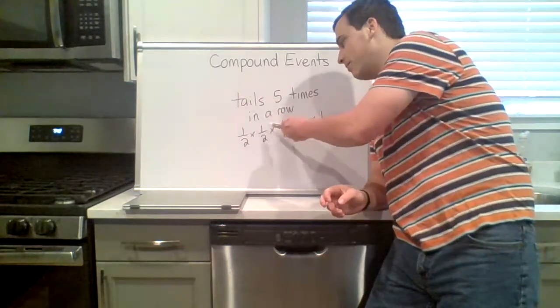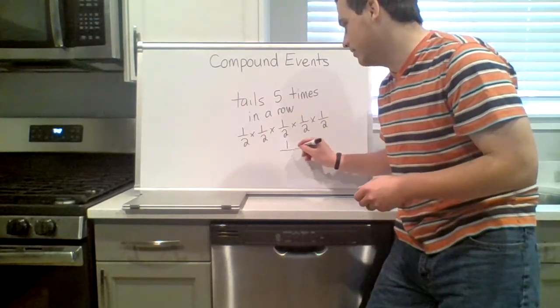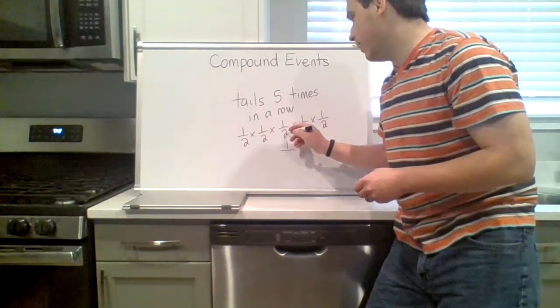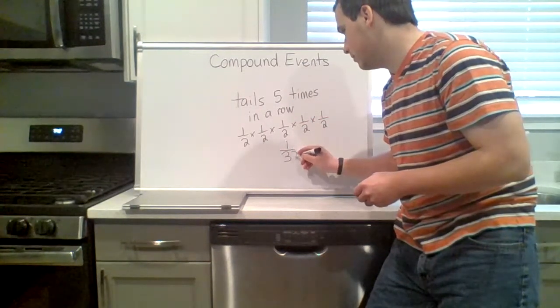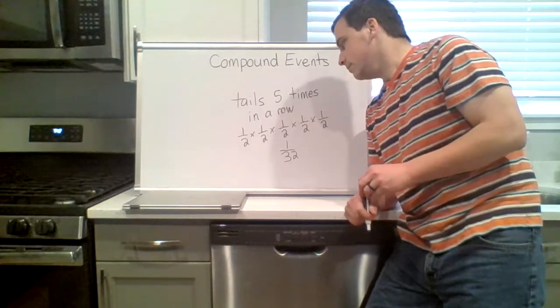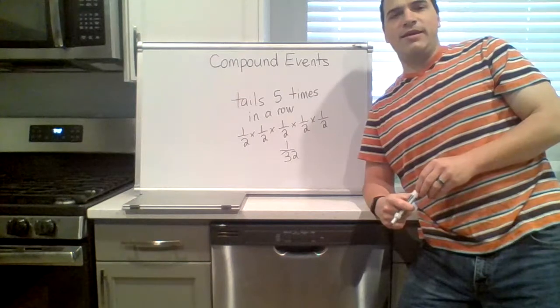Okay, one times one times one times one, we're going to calculate for that, that's just one. Two, four, eight, sixteen, thirty-two. One in thirty-two.